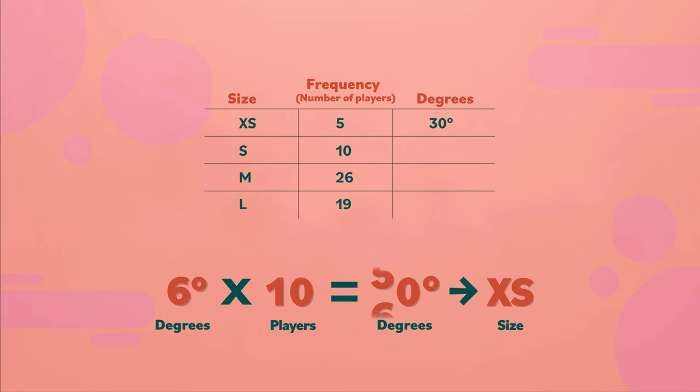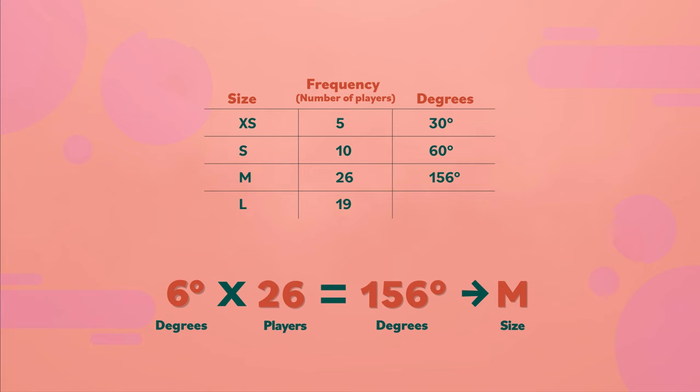Six times ten is sixty. Sixty degrees for size small. Six times twenty-six is a hundred and fifty-six. Size medium will be a hundred and fifty-six degrees. And six times nineteen equals a hundred and fourteen degrees for size large.